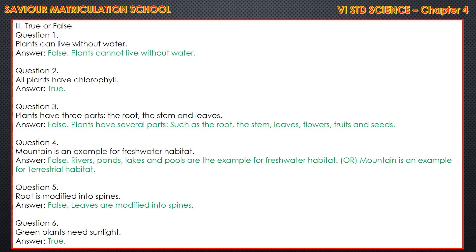Question 4: Mountain is an example for freshwater habitat. Answer is false. The correct statement is: rivers, ponds, lakes and pools are the examples of freshwater habitat. Also, mountain is an example for terrestrial habitat, not freshwater. Question 5: Root is modified into spines. Answer is false. The correct answer is: leaves are modified into spines.